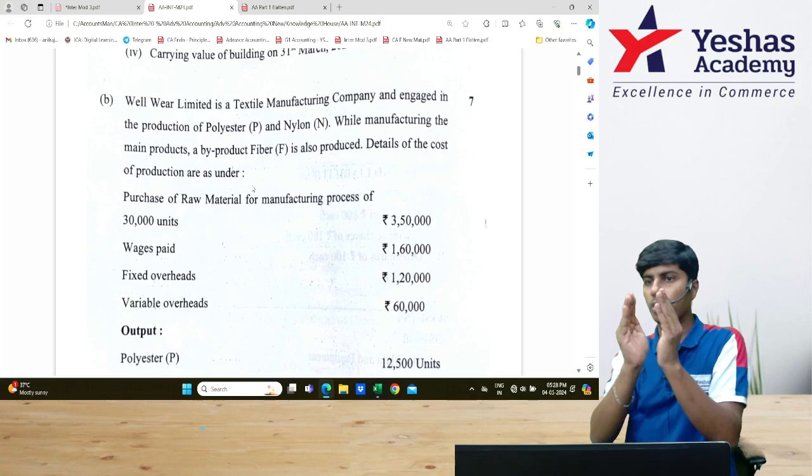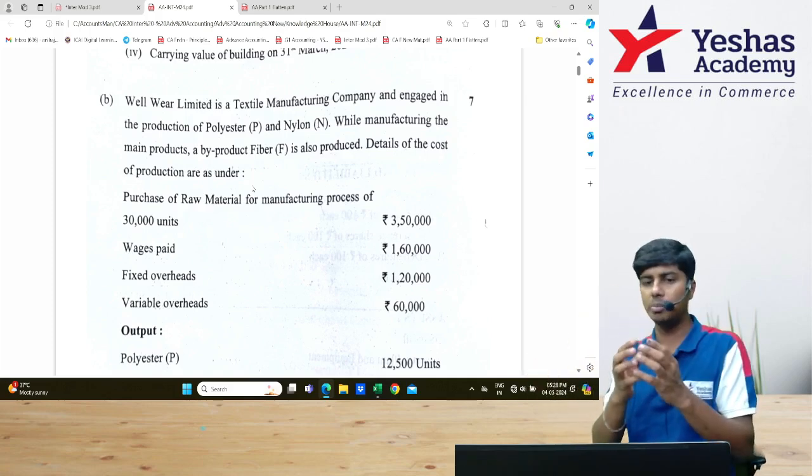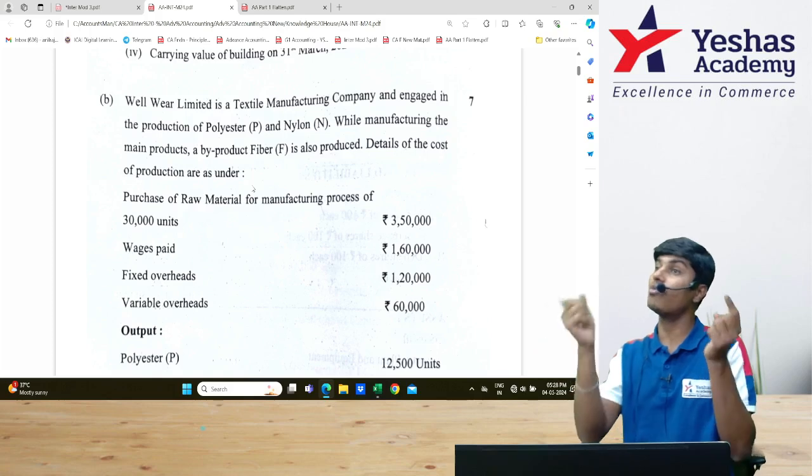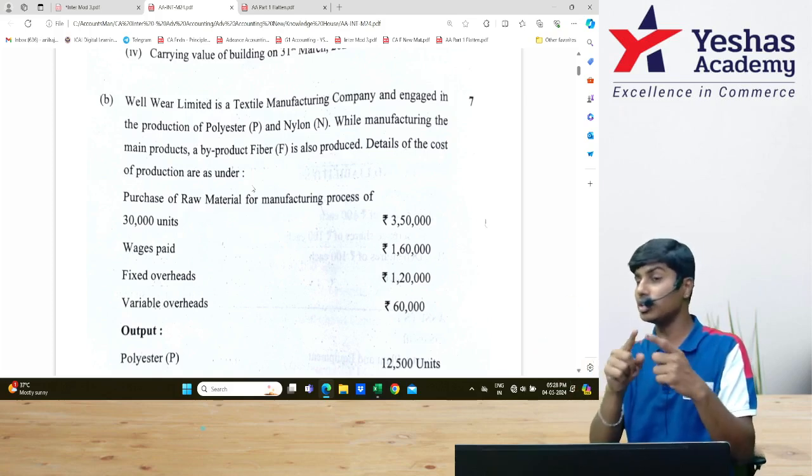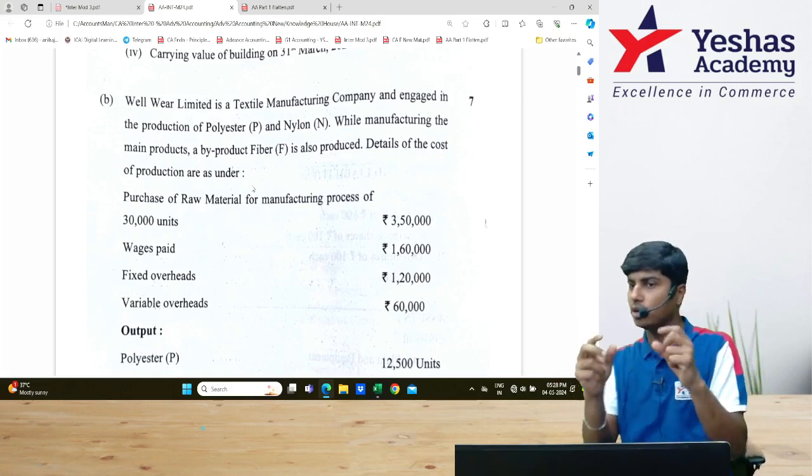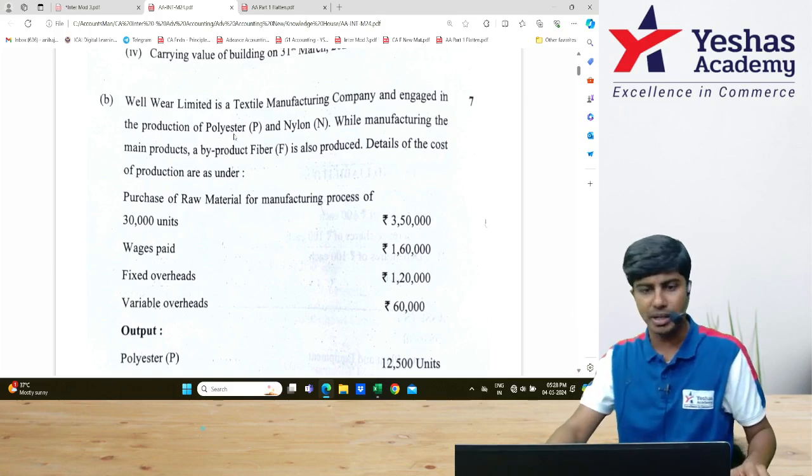From the common joint cost, we will deduct the NRV of the byproduct. The remaining joint cost will be allocated between polyester and nylon in the ratio of sales value, not sales units, not sales rupees. Sales units multiplied by sales rupees will get sales value, and in that ratio we will split it.